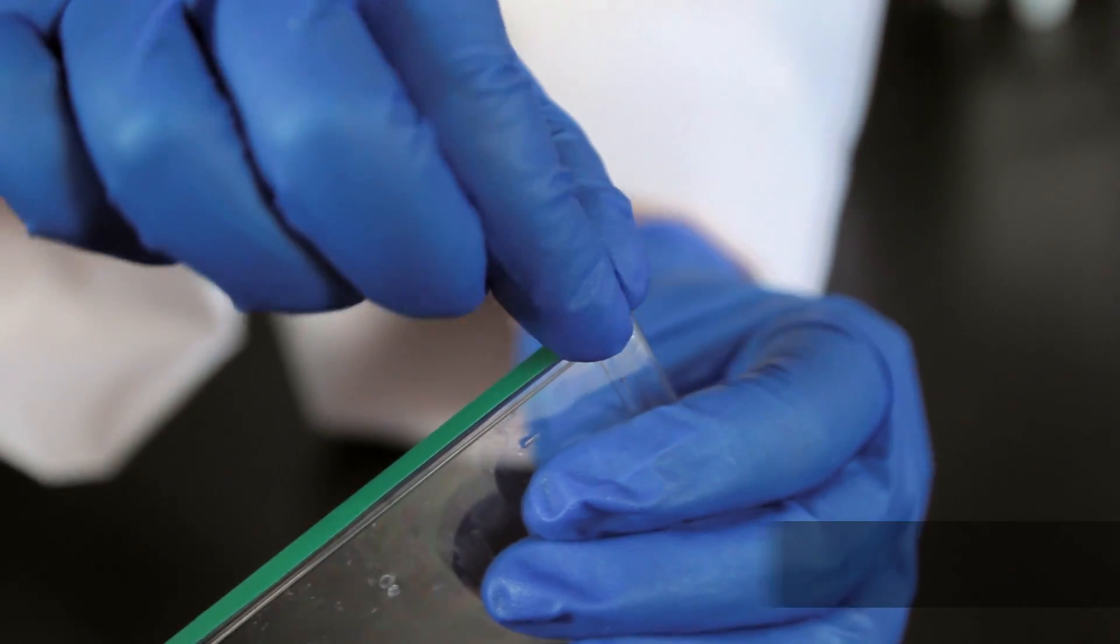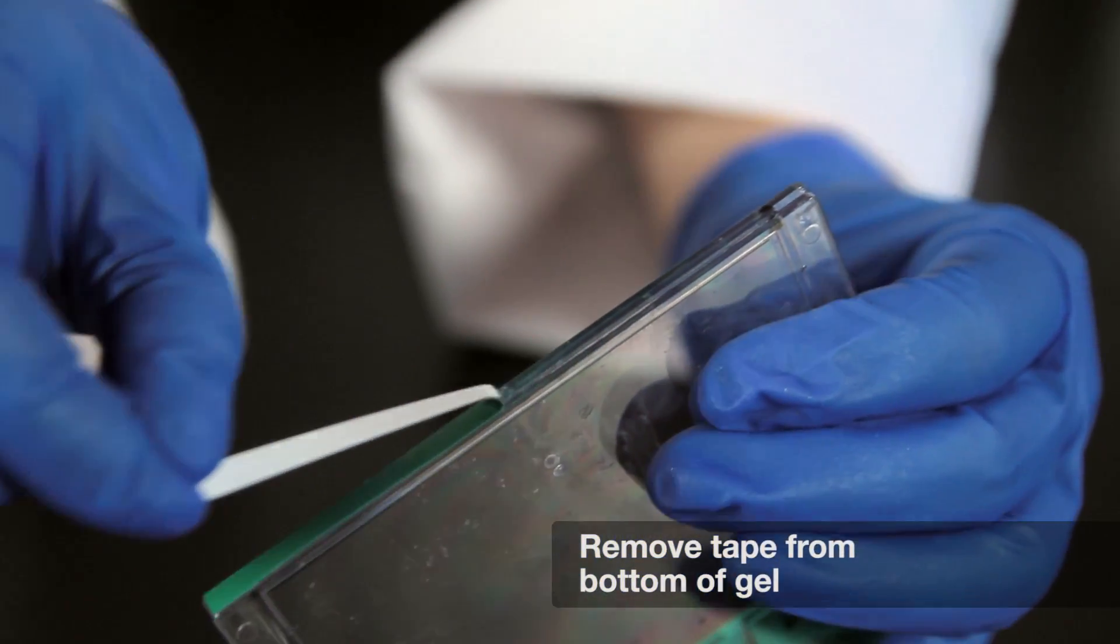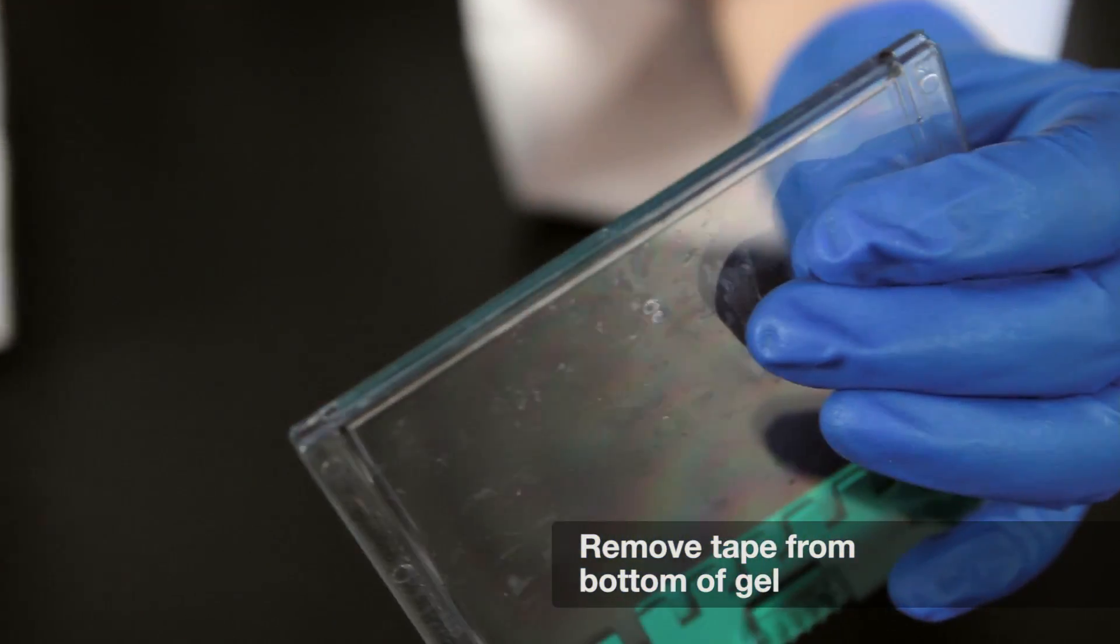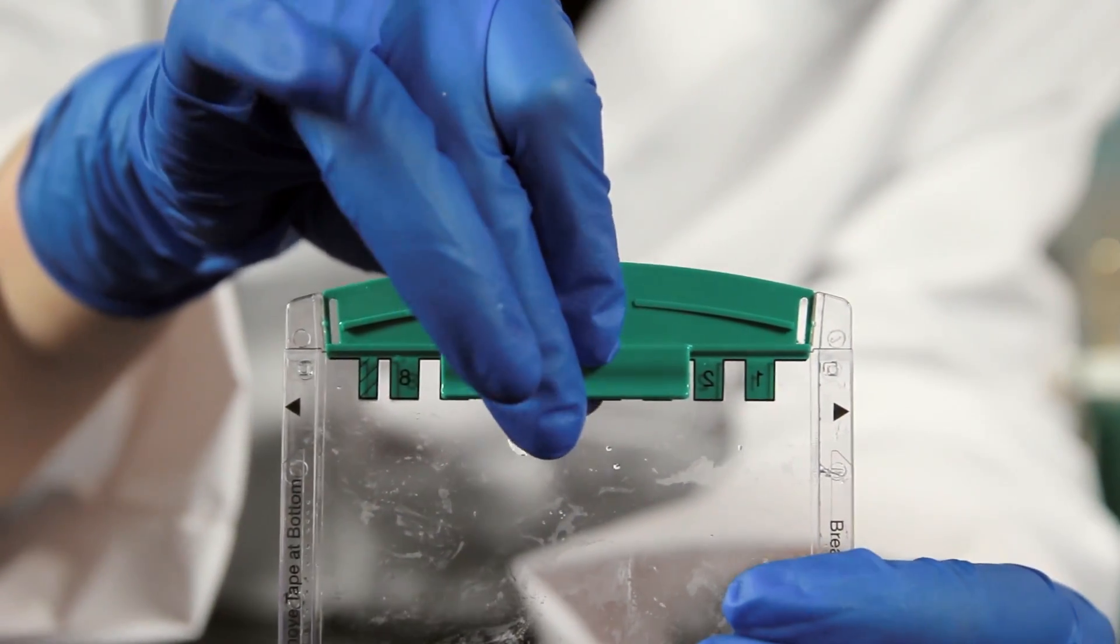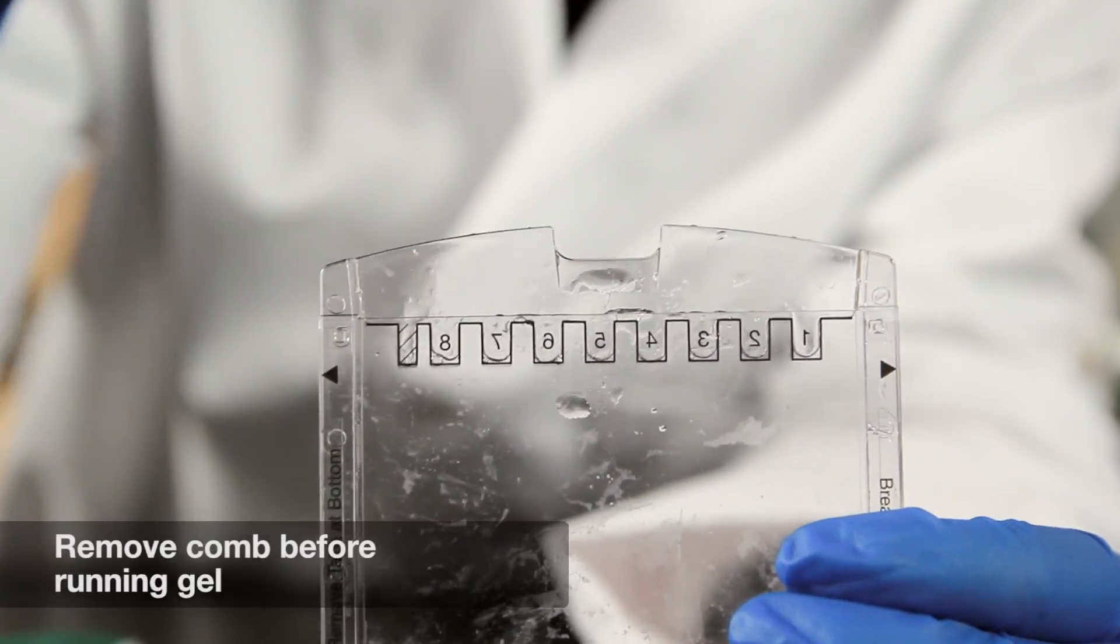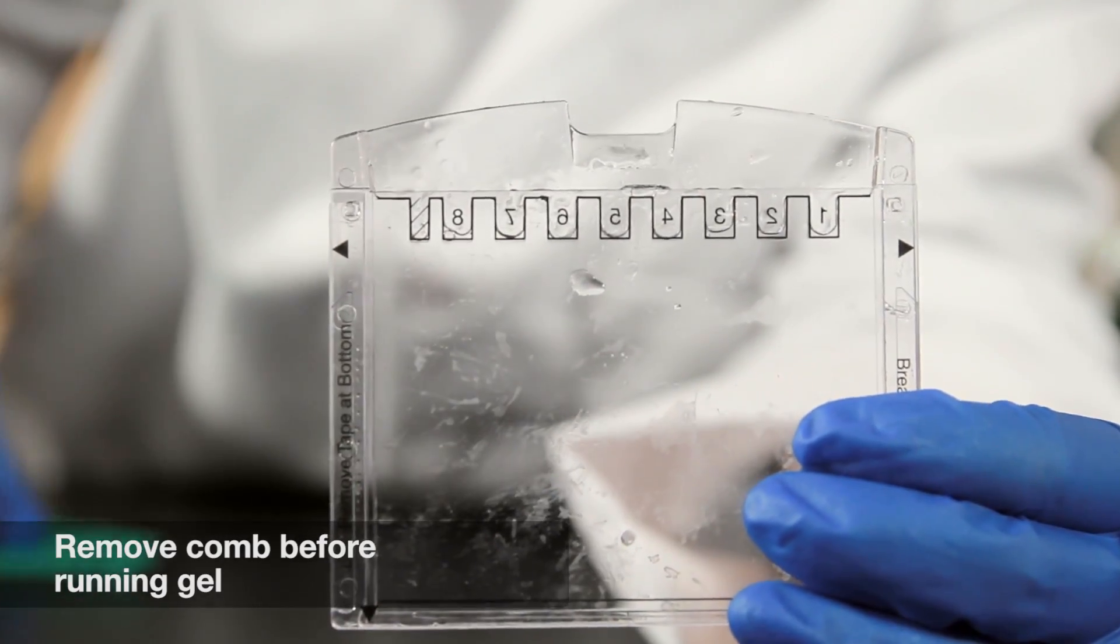First, if using ready gels, make sure the tape has been removed from the bottom of the gel. Also, it may be difficult to see the comb once you've assembled the gel sandwich. You should always remove the comb before you run the gel.